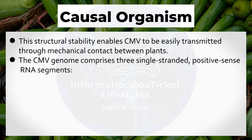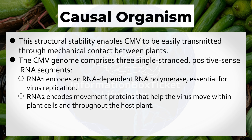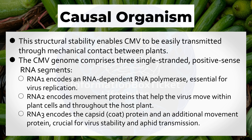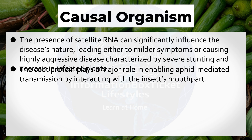The Cucumber Mosaic Virus genome comprises three single-stranded, positive-sense RNA segments. RNA-1 encodes an RNA-dependent RNA polymerase essential for virus replication. RNA-2 encodes movement proteins that help the virus move within plant cells and throughout the host plant. RNA-3 encodes the capsid protein and an additional movement protein, crucial for virus stability and aphid transmission. CMV also produces a subgenomic RNA-4, which directs the synthesis of the coat protein necessary for forming new virus particles. The coat protein plays a major role in enabling aphid-mediated transmission by interacting with the insect's mouthparts during feeding.